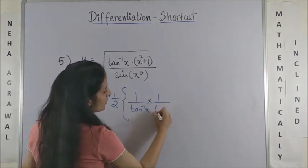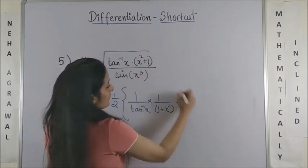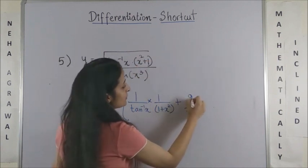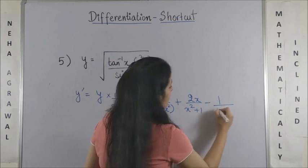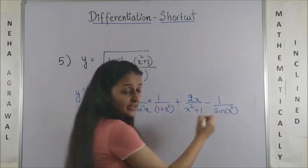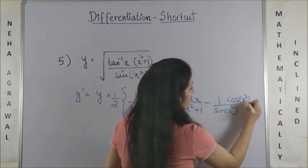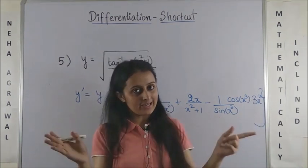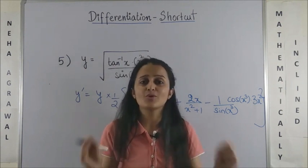Inside I get tan⁻¹(x), I write it as 1/tan⁻¹(x) into its derivative, which would be 1/(1+x²). Plus 1/(x²+1), derivative of this would be 2x. And minus 1/sin(x³) as it is into the derivative for sin(x³), which would be cos(x³) into 3x². Now, how am I differentiating? Again, refer to the chain rule video. Wasn't this so quick?